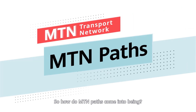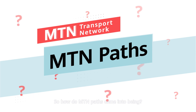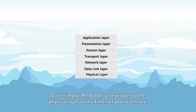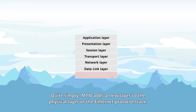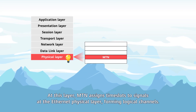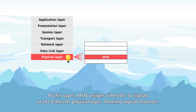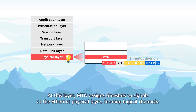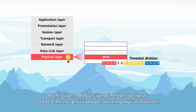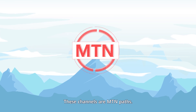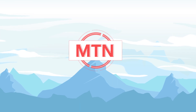How do MTN paths come into being? Quite simply, MTN adds a new layer to the physical layer of the Ethernet protocol stack. At this layer, MTN assigns time slots to signals at the Ethernet physical layer, forming logical channels. These channels are MTN paths.